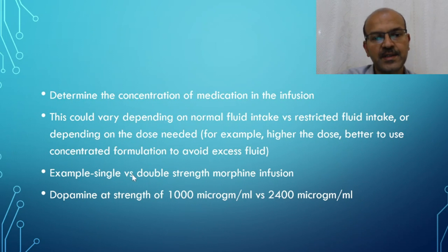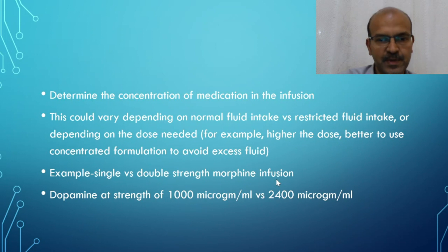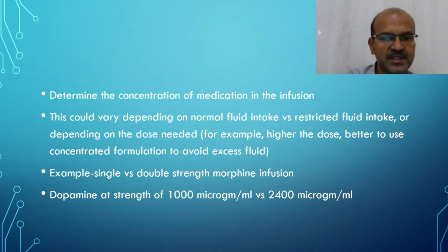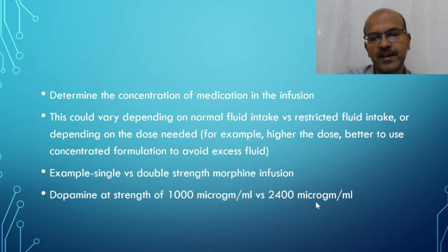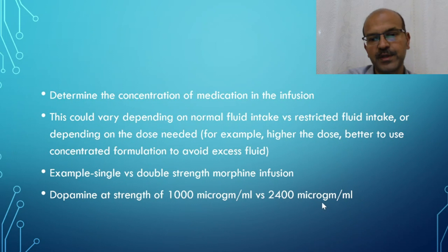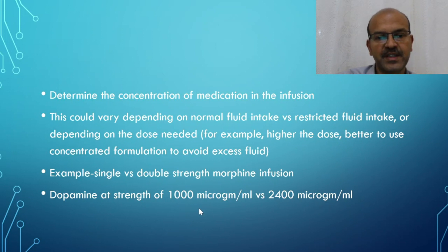An example is the use of single or double strength morphine. The same applies to insulin and many other medications — where the dose goes high, you think about concentrating it so you don't waste valuable fluid intake on the diluent. For dopamine, the usual strengths are 1000 micrograms per mL or 2400 micrograms per mL, and most units settle on 2400 micrograms per mL as standard.